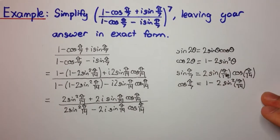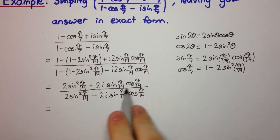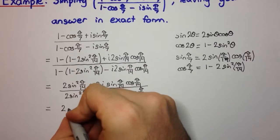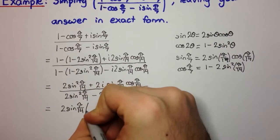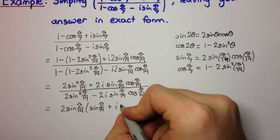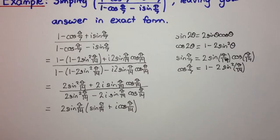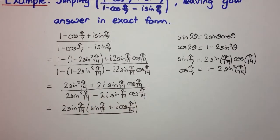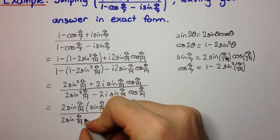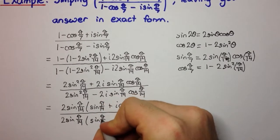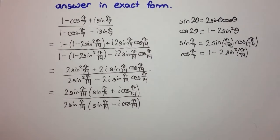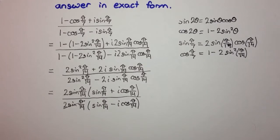Now we look for cancellations. In the numerator we can factor out 2·sin(π/14), leaving sin(π/14) plus i·cos(π/14). We can do the same in the denominator, factoring out 2·sin(π/14), leaving sin(π/14) minus i·cos(π/14). The 2·sin(π/14) factors cancel, leaving just these two bracket expressions.